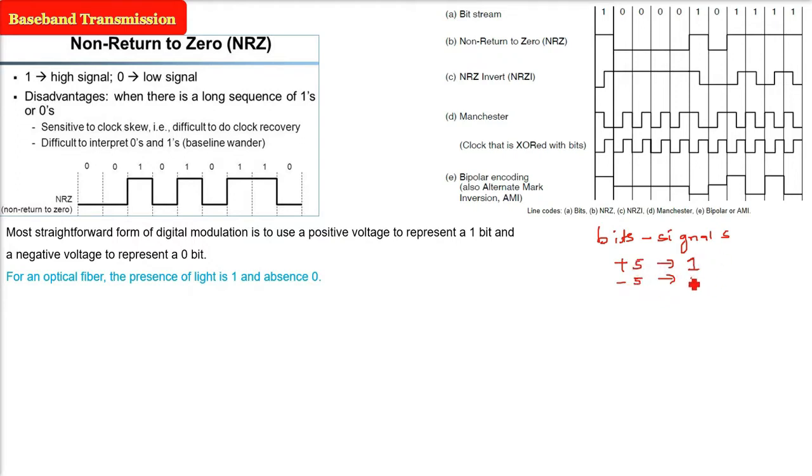But when you talk about the optical fiber, how do we change it? How do we decipher it? You can say that the presence of light can be regarded as 1 and the absence of light can be regarded as a 0. So, this scheme is nothing but NRZ or non-return to 0. The scheme is called non-return to 0.